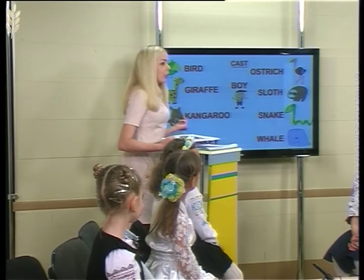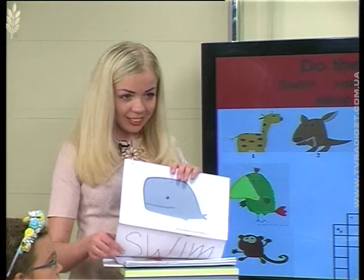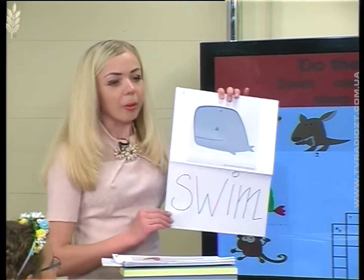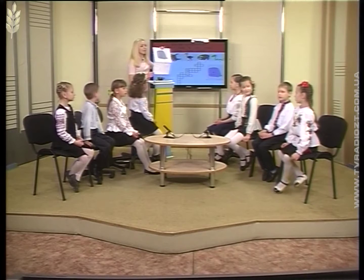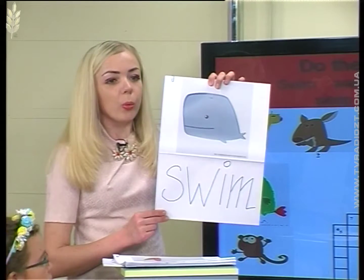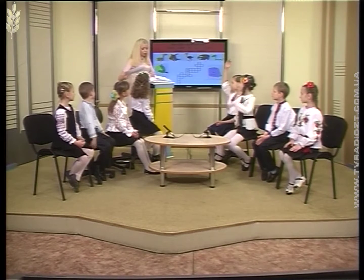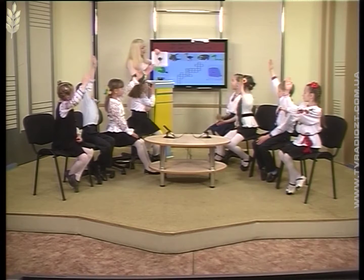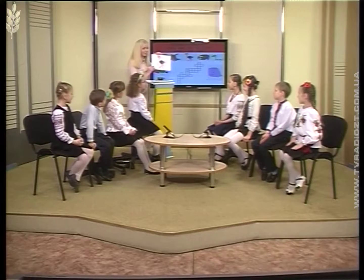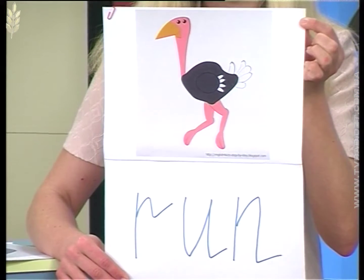Let's complete the crossword with the help of the words from the box. Can you help me? For example, a whale can swim. All together: a whale can swim. What about an ostrich? An ostrich can run. Is she right? Yes! Let's check. An ostrich can run.